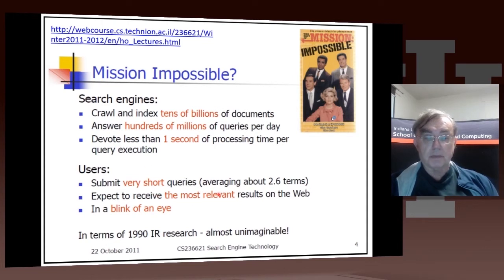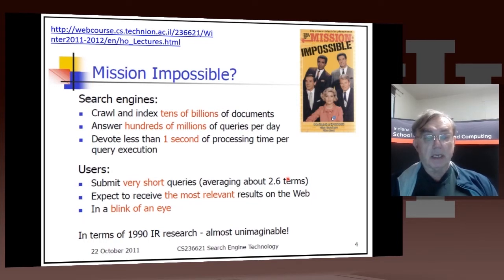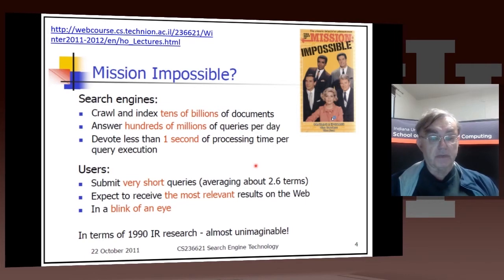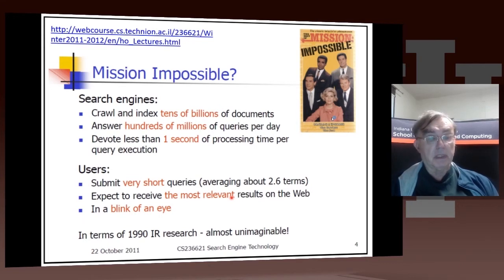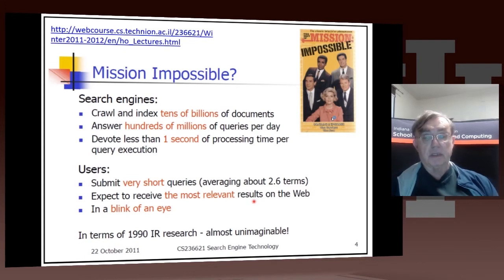Users do not tend to have very complicated queries. The advantage is that simple queries are quicker to process. On the other hand, it is quite hard to get very restrictive answers — that's why when you issue a small query to Google or Bing, they give you lots and lots of responses. You have to get the most relevant, and these slides will discuss what 'relevant' means, because it's really about what the user wants, which isn't always clear from the simple query.